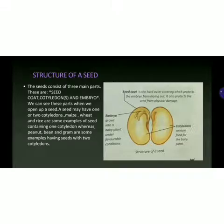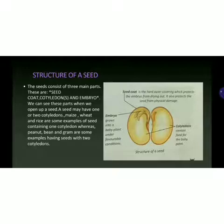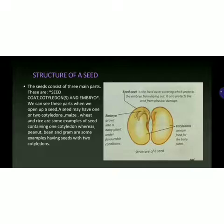Finally, the most important part of the seed is the embryo — the baby plant. It grows into a baby plant under favorable conditions. The embryo symbolizes the life present inside the seed. This embryo takes food from the cotyledons. The seed coat is protecting it, and when the embryo is strong enough to face the sunlight and grow into a plant, it comes out of the seed. This life is present inside the embryo inside a seed.